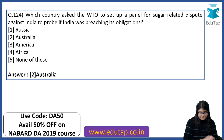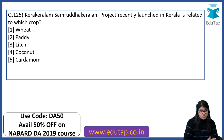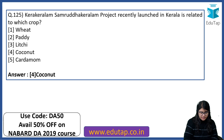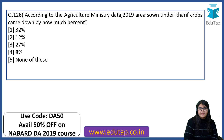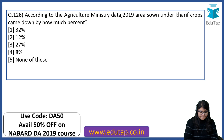The Kera Keralam Samrudha Keralam project was recently launched in Kerala — it is related to which crop? The right answer is coconut. According to the Agriculture Ministry data, the area sown under Kharif crops in 2019 came down by 27% — this data point needs to be remembered.